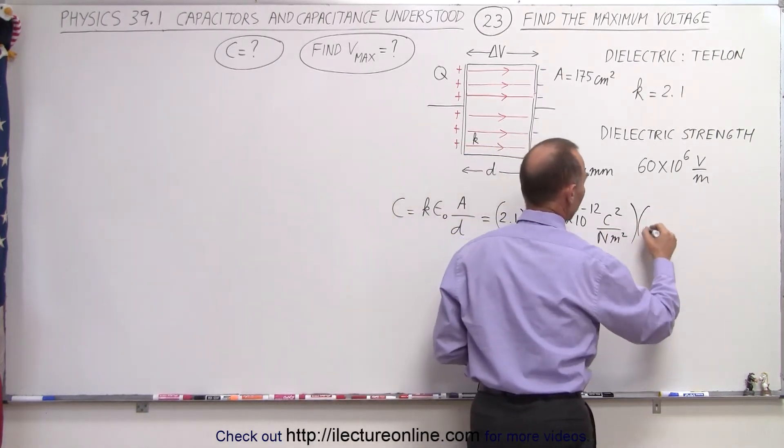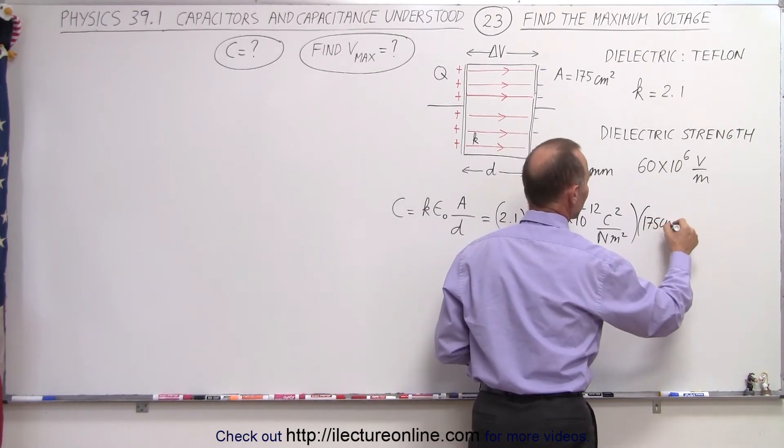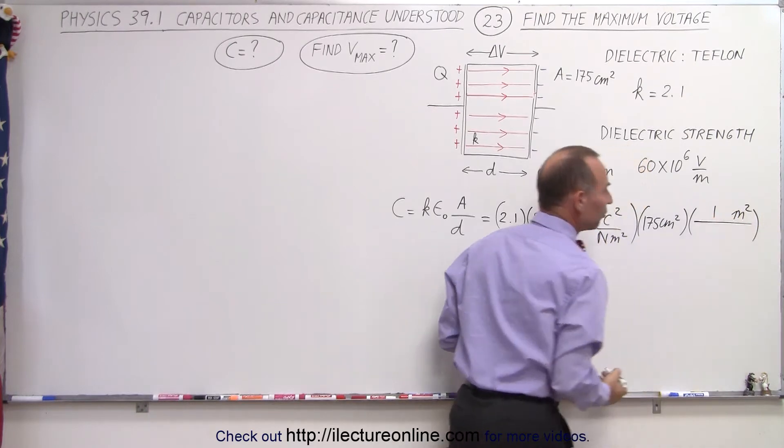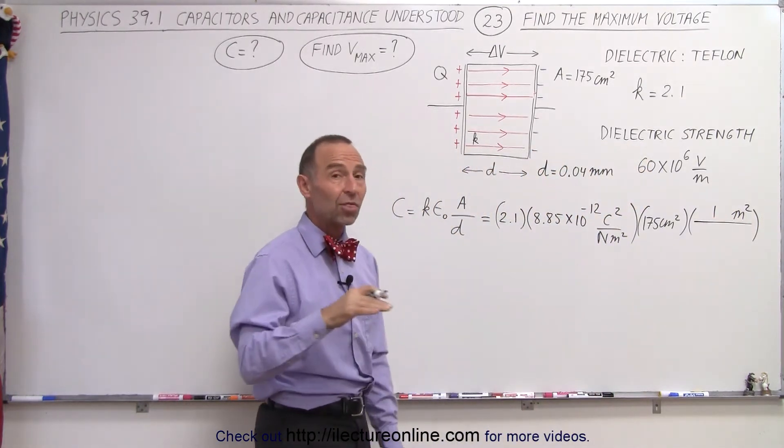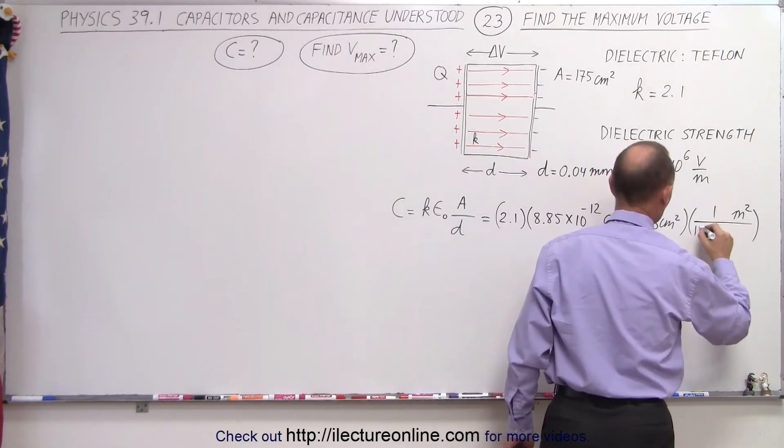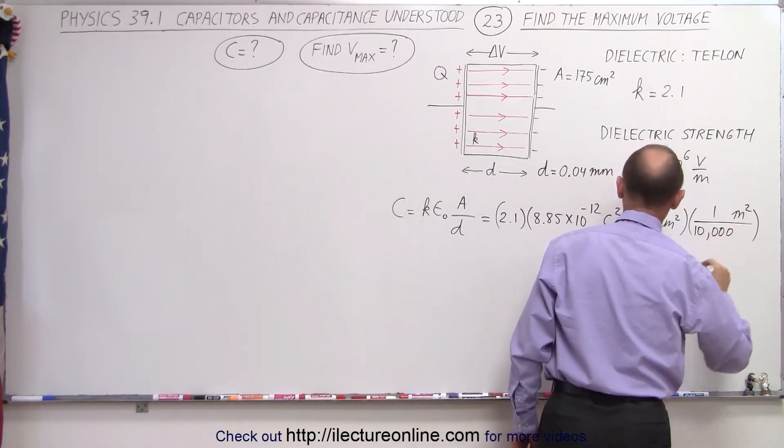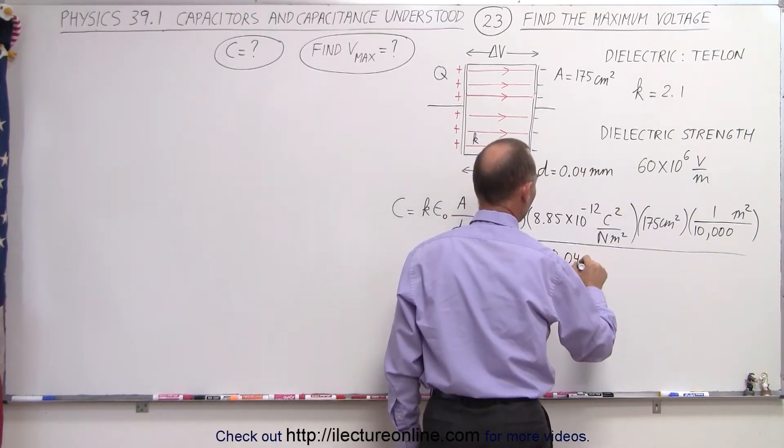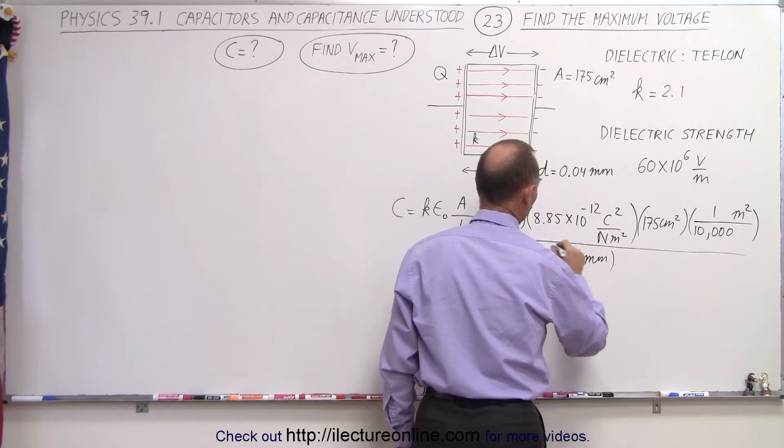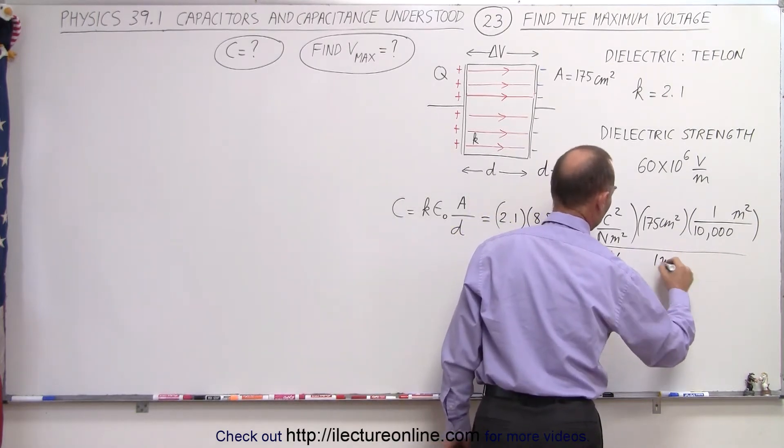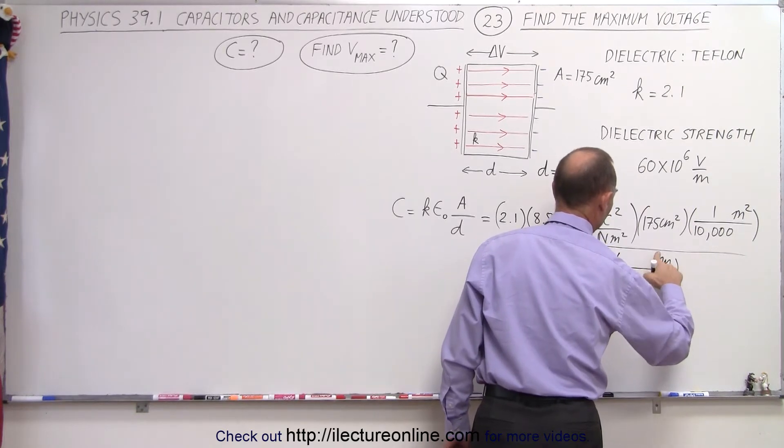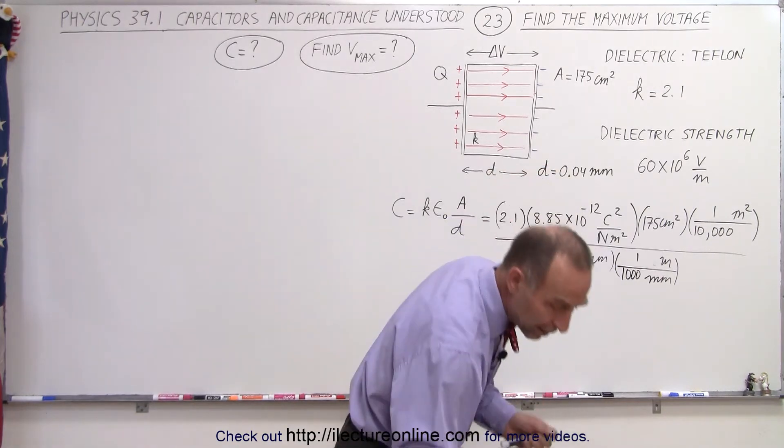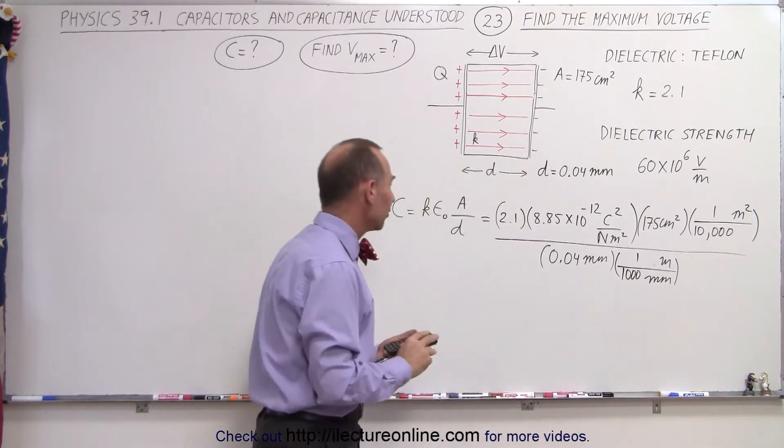Multiply it times the area, which is 175 centimeters squared, but now we have to convert that to meters squared. And since there's 100 centimeters in 1 meter, that means 10,000 square centimeters in a square meter. So 10,000 goes in the denominator, and the whole thing here divided by the distance, which is 0.04 millimeter. Converting that to meters, we have 1 meter divided by 1,000 millimeters. So now we're ready to find the capacitance of this capacitor.